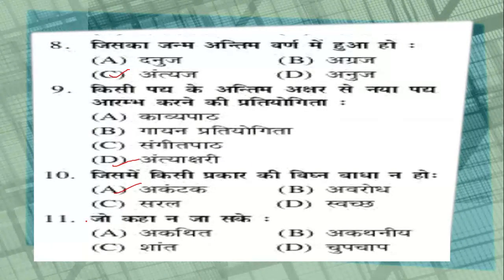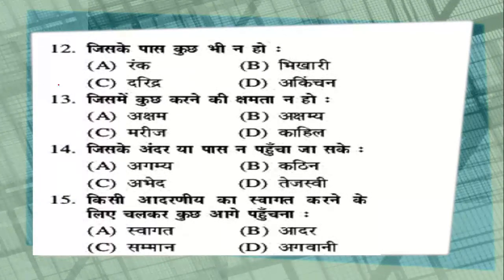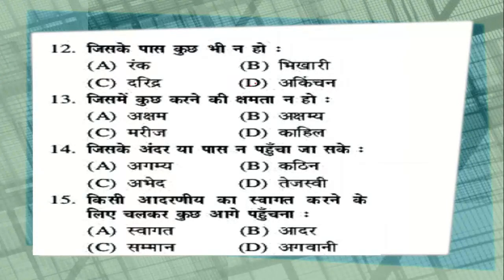Question number 11: जो कहा न जा सके — option A: अकथित, option B: अकथनीय, option C: shown on screen. The correct answer is option B, अकथनीय — जो कहा न जा सके. Question number 12: जिसके पास कुछ भी न हो — option A: रंक, B: भिखारी, C: दरिद्र, D: अकिंचन. The correct answer is option D, अकिंचन — जिसके पास कुछ भी न हो.